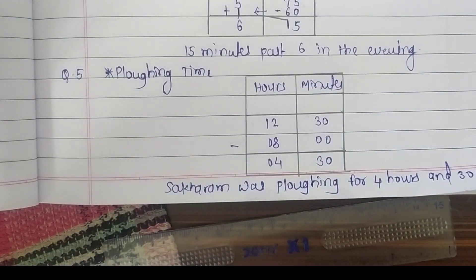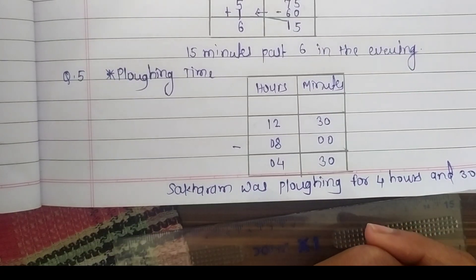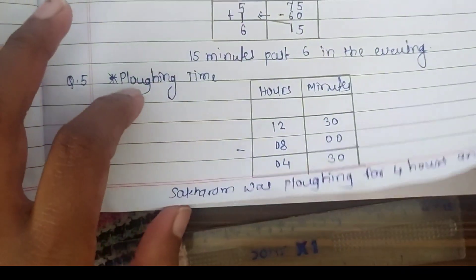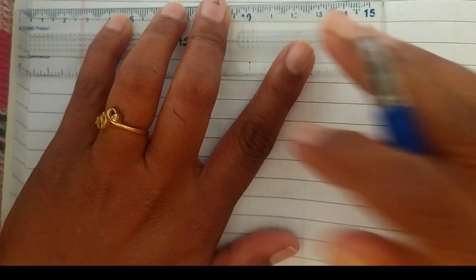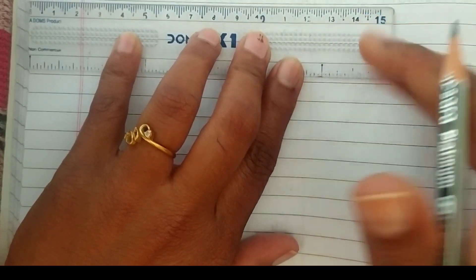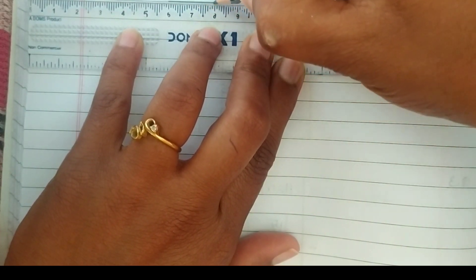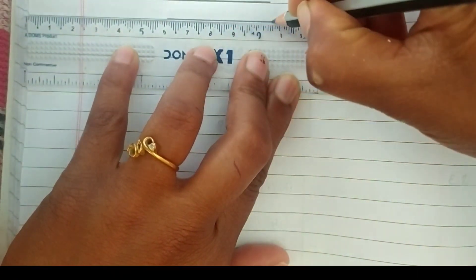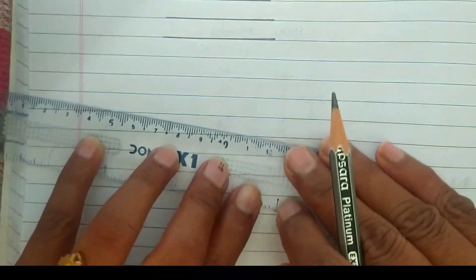Now for the second question: how long did it take him to reach home from the field? He stopped work at 12:30 in the afternoon and reached home at 1:30. We write 1:30 as 13:30 (13 hours and 30 minutes) in 24-hour clock, so we can subtract correctly.